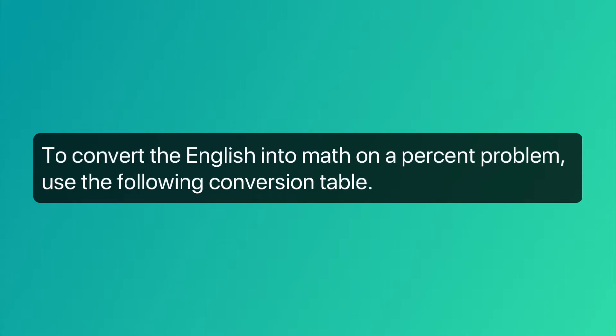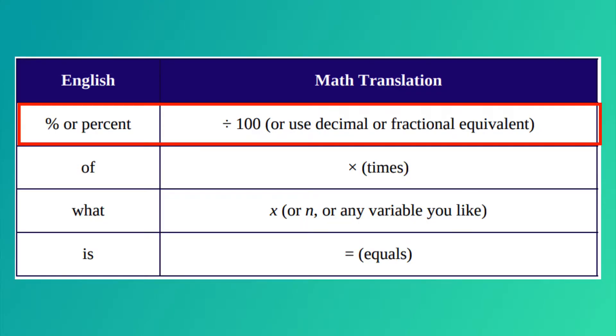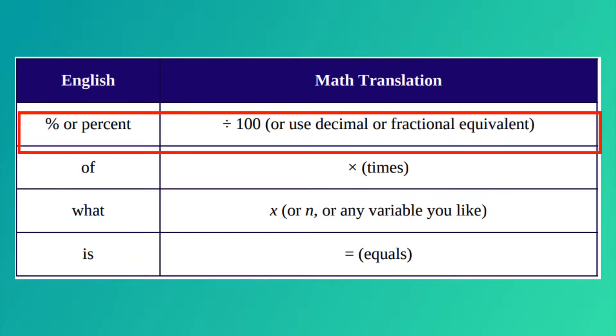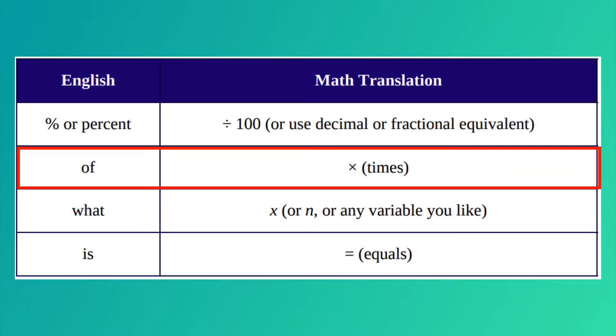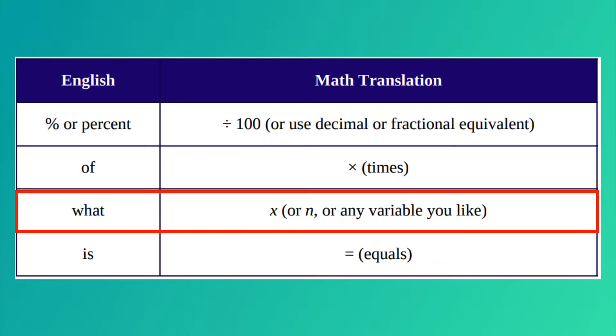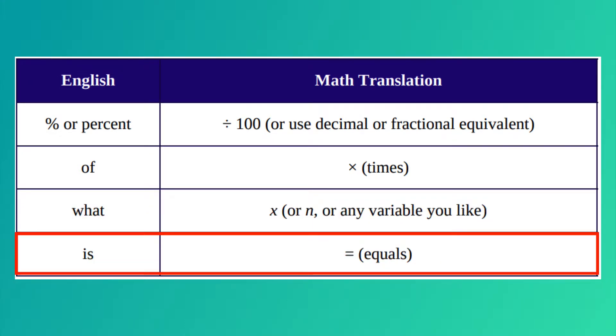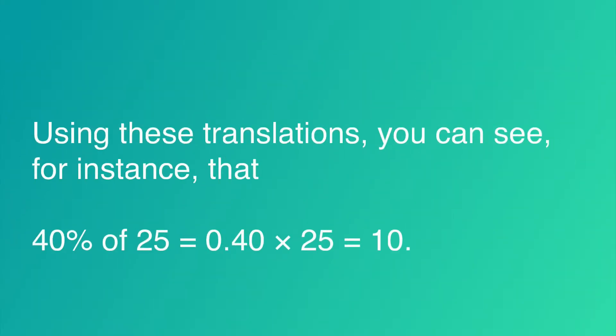Let's talk about converting English into math on percent problems. To do this, use the following conversion table. Percent means divided by 100 or use decimal or fractional equivalent. Of stands for multiplication, so you'd use times. What means x, or basically any variable you would like. Is means equals. Using these translations, you can see, for instance, that 40% of 25 equals 0.40 times 25 equals 10.